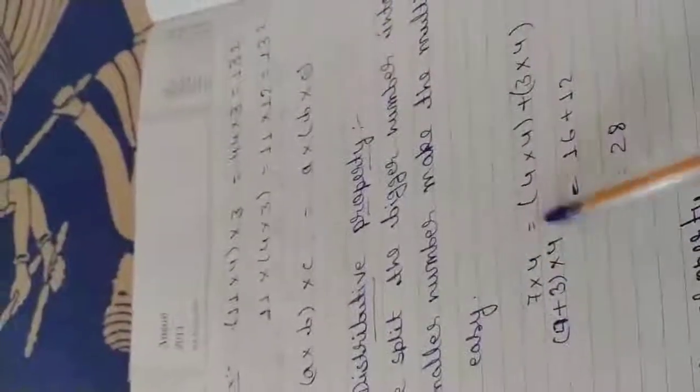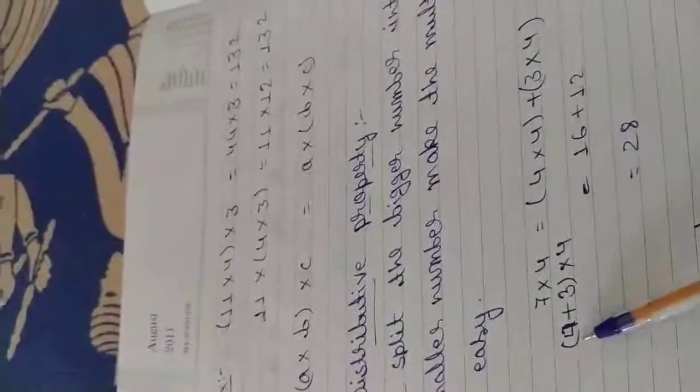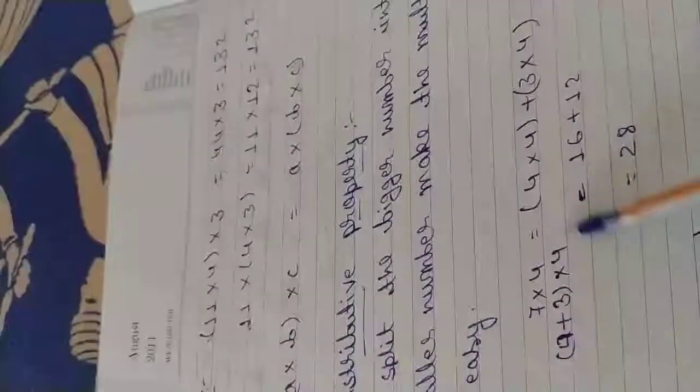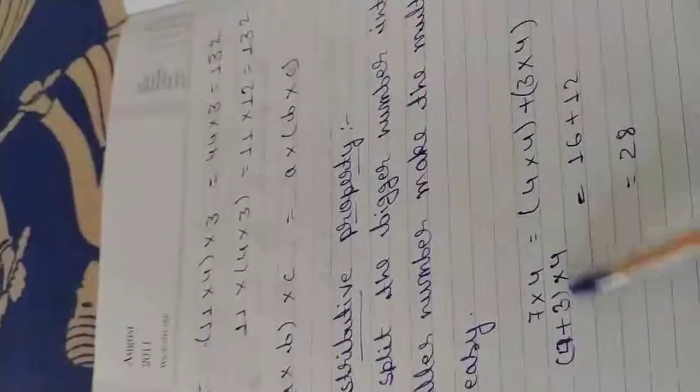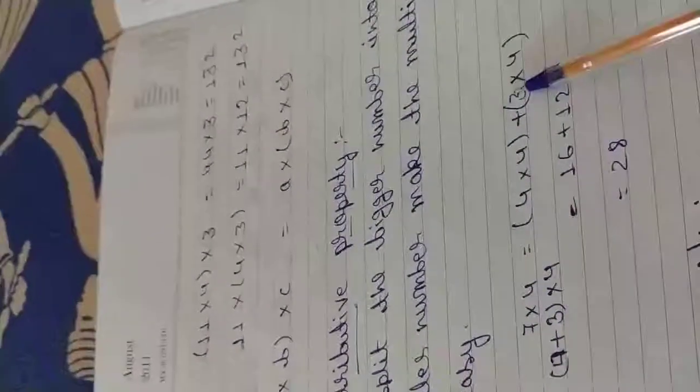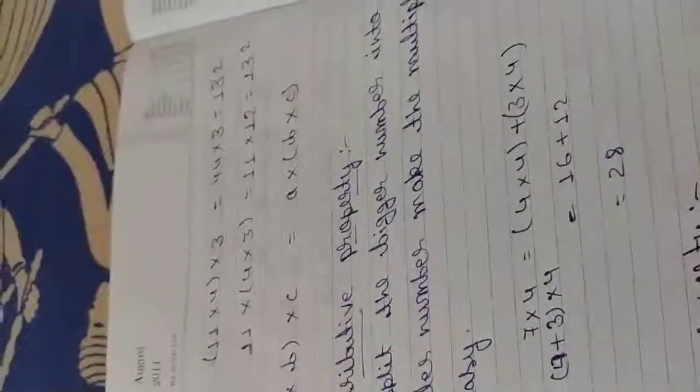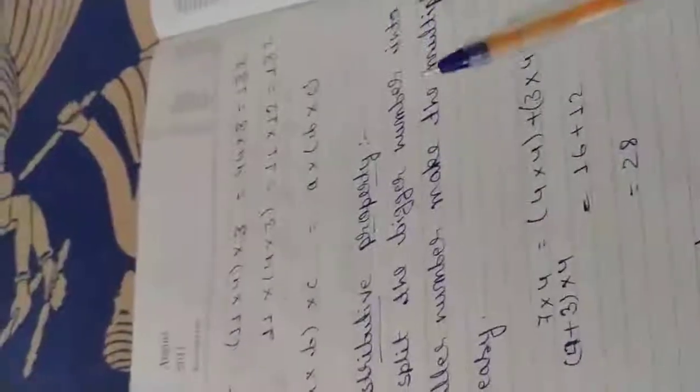We take example 7 into 4. I have divided 7 into 2 parts, 4 and 3. We can write 4 into 4 plus 3 into 4. 4 into 4 is 16 plus 12. 16 plus 12 is 28. We do this property for big digits.